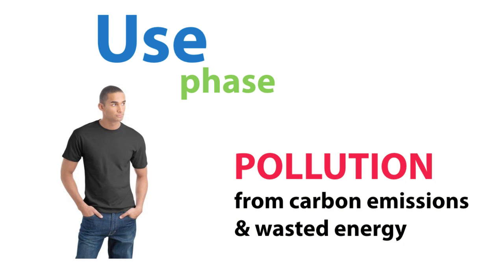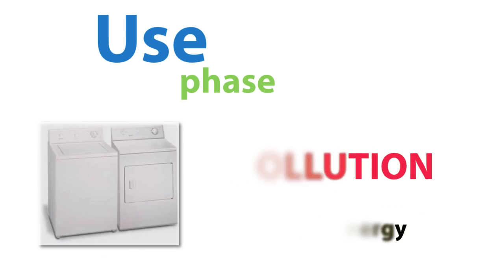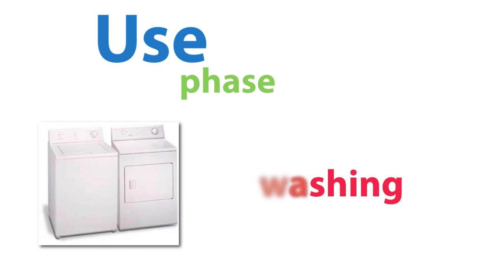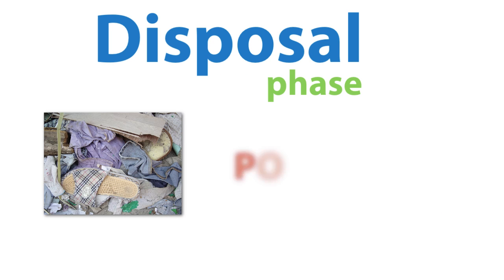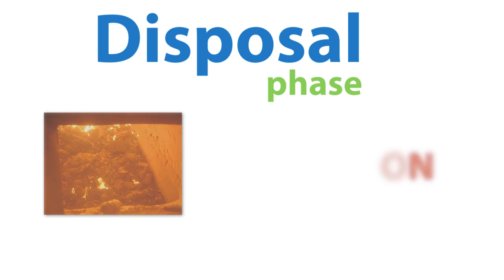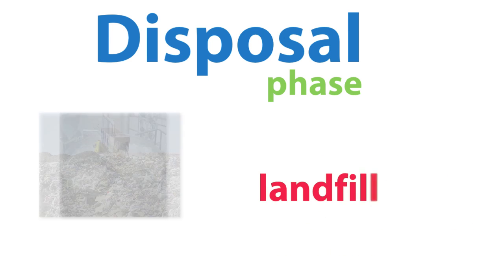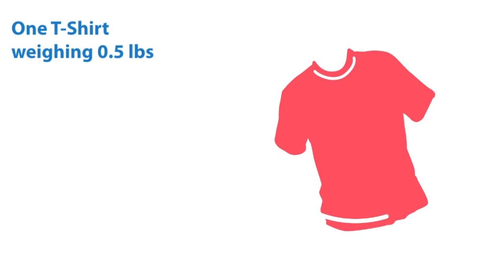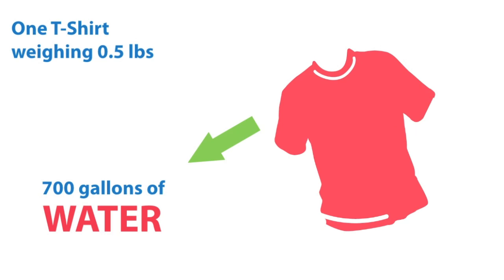During the use phase, pollution and wasted energy come from washing and drying the clothes. And finally there's the disposal phase, where pollution comes from wasted energy — from incineration and water treatment to the unnecessary overflows of landfills.